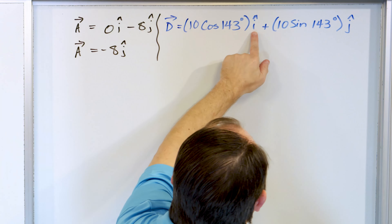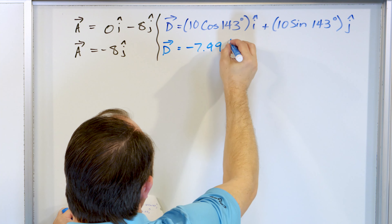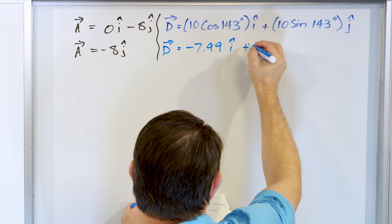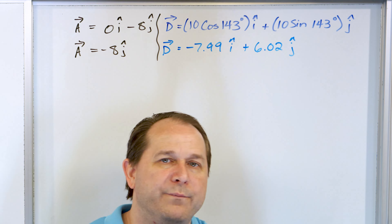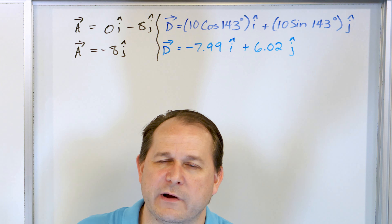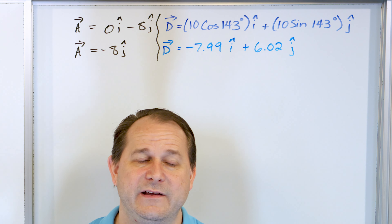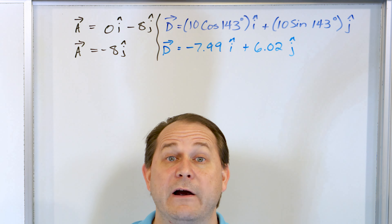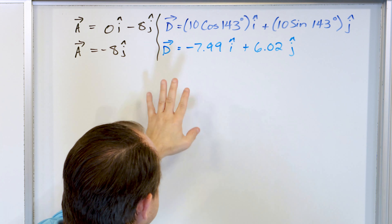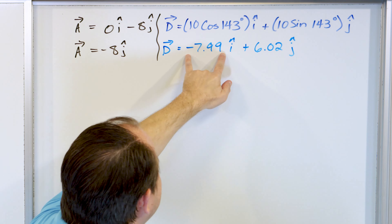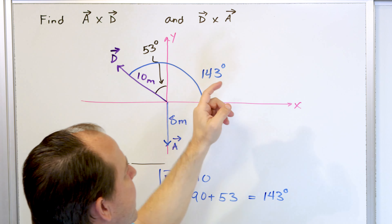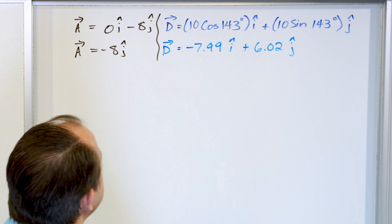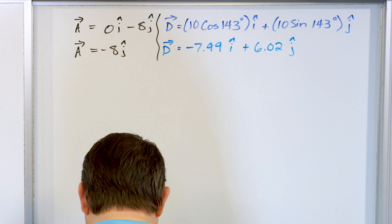Taking cosine of 143 times 10 gives negative 7.99 in the I-hat direction. Taking sine of 143 times 10 gives 6.02 in the J-hat direction. Note that I'm rounding to two digits here — carrying more digits gives a more accurate result. The trig takes care of the proper signs automatically. Now I have vector A in unit vector notation and vector D also in unit vector notation, so I'm ready to calculate A crossed with D using the determinant.